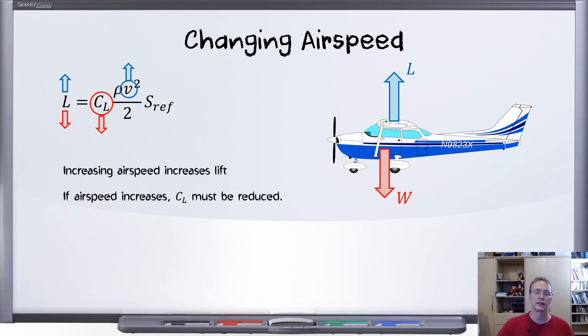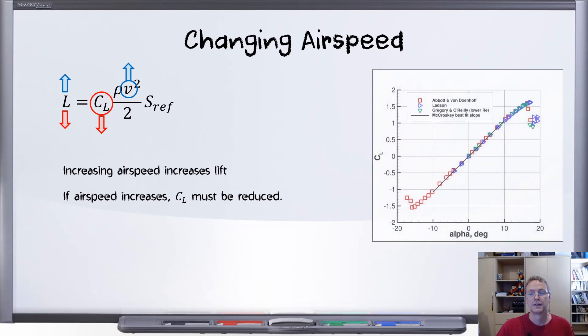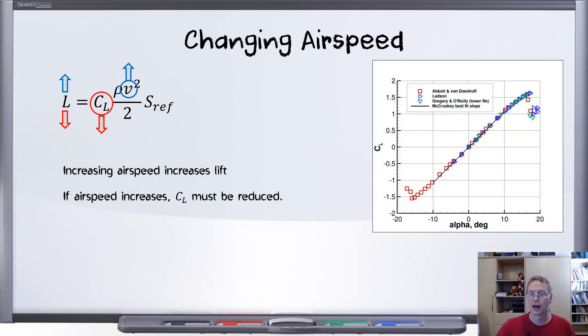Taking a look at this equation, you can see something jumping out at you that will let you do that. The lift coefficient right there will allow you to reduce the total lift if you can somehow reduce the lift coefficient. How do we do that? Remember this chart. How do I reduce the lift coefficient? Well, if I reduce the angle of attack, that'll get the job done.